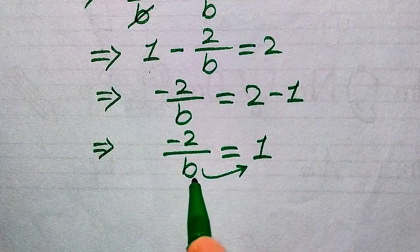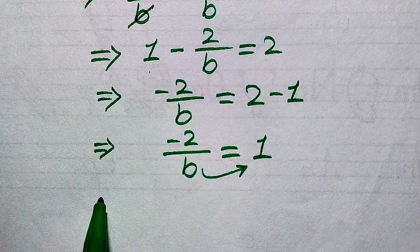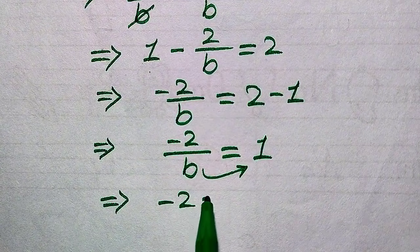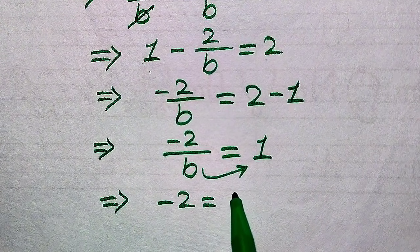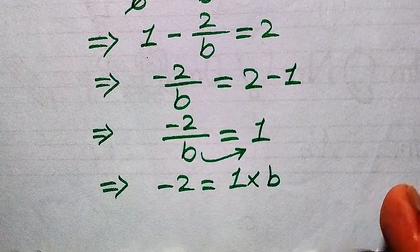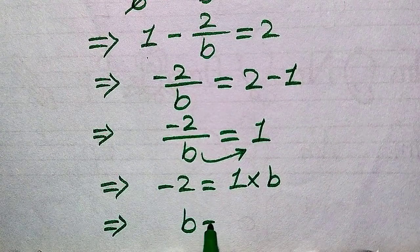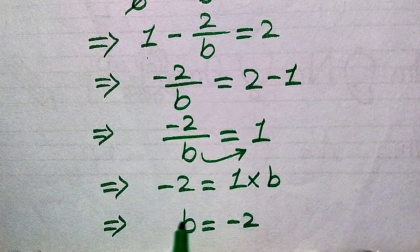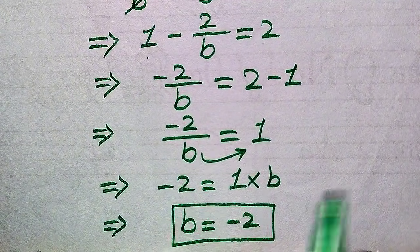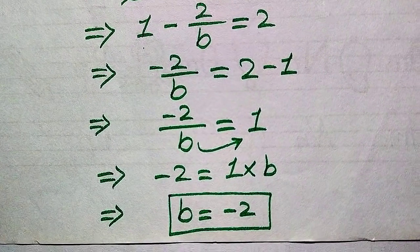Our target is to get the value of b, so we move b to the right hand side. Since it is divided, when moved it is multiplied by 1, giving us minus 2 equals 1 times b. Therefore b equals minus 2. This is the only root of the given equation obtained from this method.